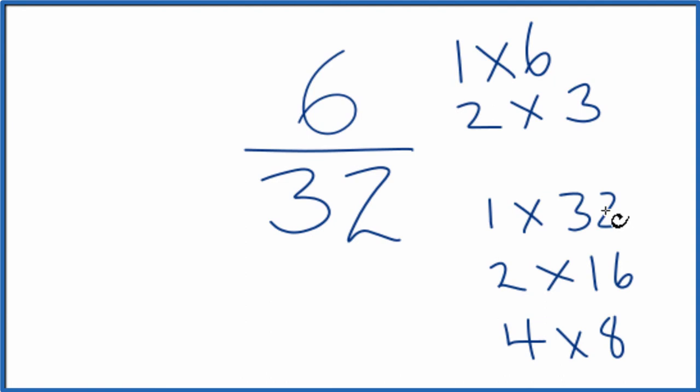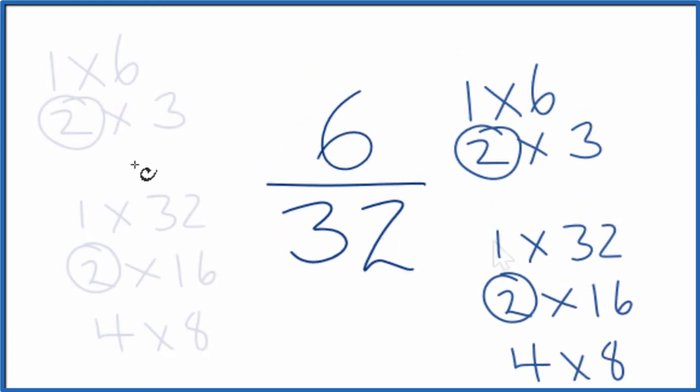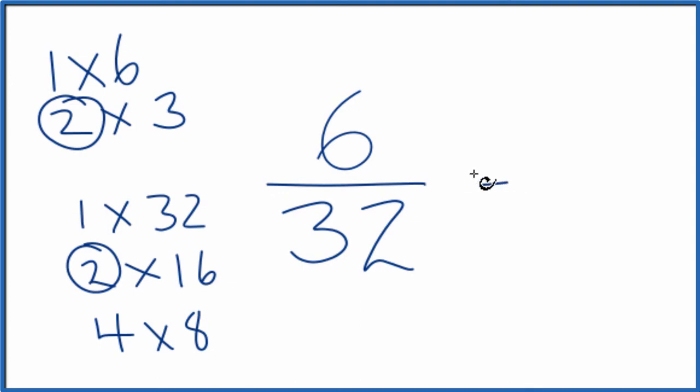For 32, the largest number I see that's common is 2. That's our greatest common factor, so we'll divide 6 by 2 and 32 by 2. Let's move these over. 6 divided by 2 that's 3, and then 32 divided by 2 that's 16.